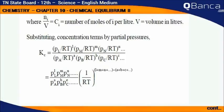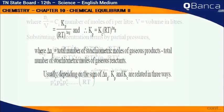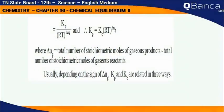This simplifies to the product of partial pressure terms divided by RT to the power delta Ng, and therefore Kp equals Kc times RT to the power delta Ng.